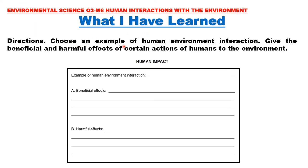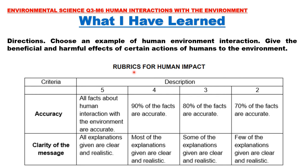What I Have Learned. Choose an example of human-environment interaction. Give the beneficial and harmful effects of certain human actions on the environment. You are going to complete the box with your chosen example of human-environment interaction — you can choose from numbers 1 to 9 discussed earlier — then write the beneficial effects and the harmful effects. The rubrics for grading are accuracy and clarity of message. All facts about human interaction with the environment must be accurate, and all explanations given must be clear and realistic. A perfect score for this activity is 10 out of 10.